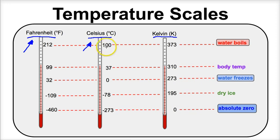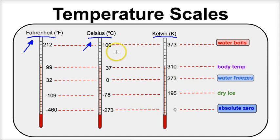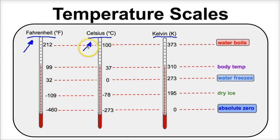100 degrees Celsius is the temperature at which water boils. That would be a very hot day — they might think that Armageddon is happening, or that the apocalypse is coming, because 100 degrees Celsius is a very, very hot day. And in fact, if it ever got that hot outside, none of us would be here.